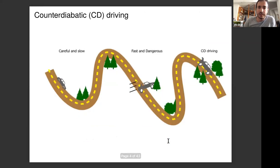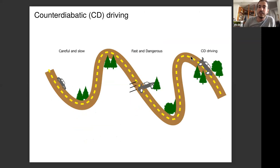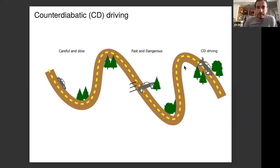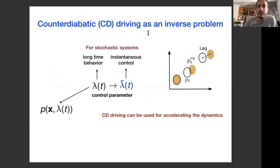To understand this counter-diabatic driving, consider a simple analogy: imagine a road with many turns and bumps. Going very carefully and slowly keeps you on track. Going fast risks deviating from the path. Counter-diabatic (CD) driving is like adding spoilers to a car — creating a contracting velocity field that keeps you on the road even at high speed. It's an inverse problem: find the operator to apply in order to maintain the desired trajectory at finite time.